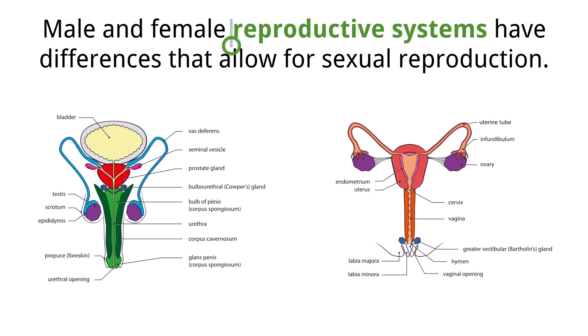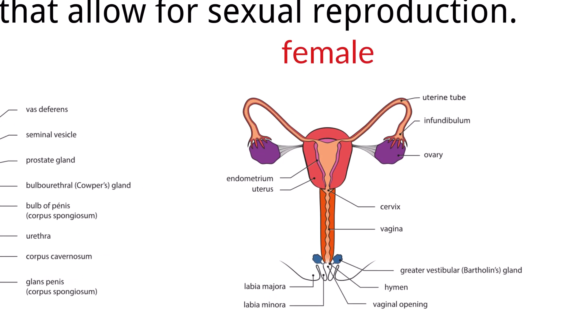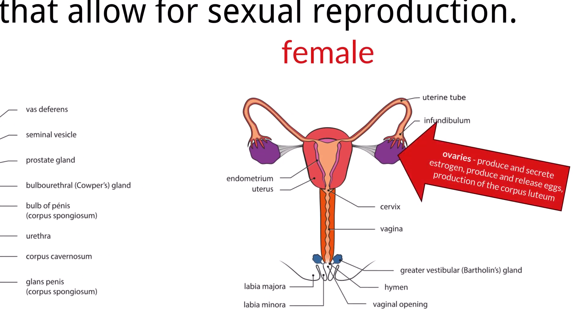The male and female reproductive systems are adapted for the production and release of gametes. The female also has adaptations to allow for fertilization of the egg in an environment conducive to the growing fetus. The female reproductive system includes the ovaries. The role of the ovaries is to produce and secrete estrogen, as well as produce and release eggs in the form of secondary oocytes. The ovary is also the place where ovulation occurs and the production of the corpus luteum.